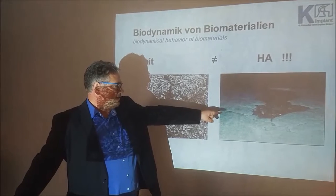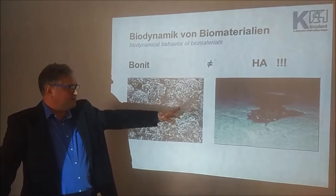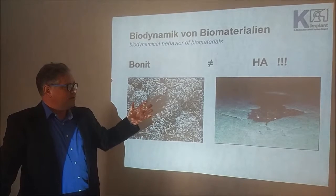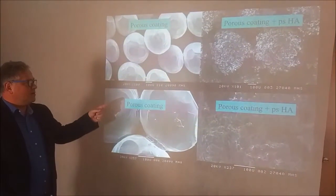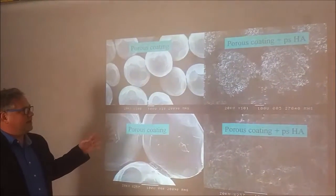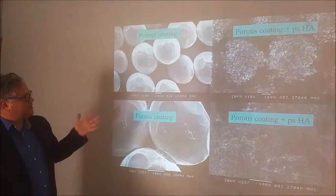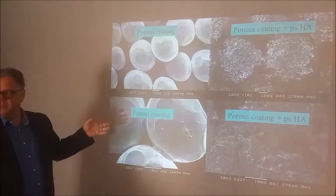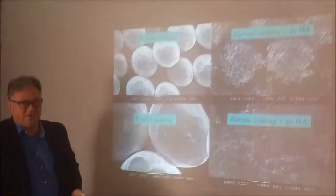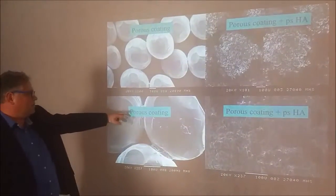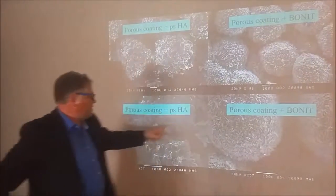With standard HA plasma spray the coating is very thick, so the connection to the surface is not so stable — sometimes you see it fall off when you hammer an HA stem inside. You may see a little dust in the OR light — that is the HA, and it is gone. Now going into details between the HA and the bonite: you see enlargements of plasma spray coated surfaces with small titanium balls to enlarge the surface, then an additional coating on top. Here the coating is HA plasma spray, and on the next picture you will see the bonite — a really different structure.